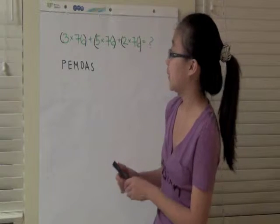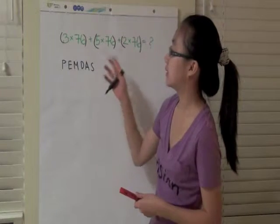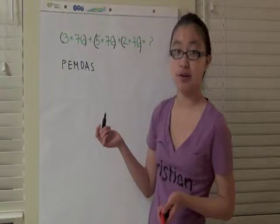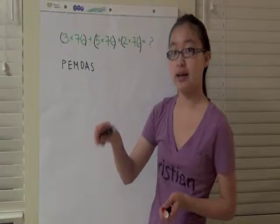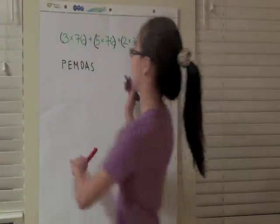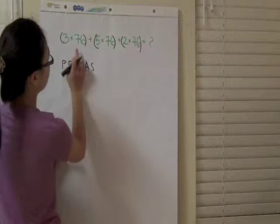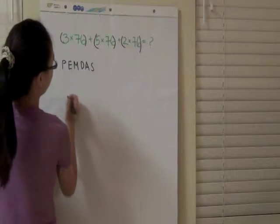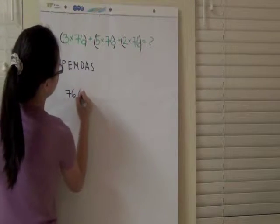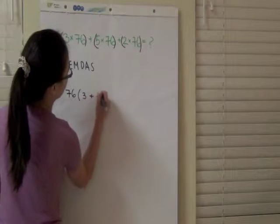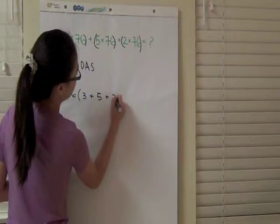One trick is called factoring, where you do the opposite of distributive property. When you multiply to everything in the parentheses, you can take everything out. So since 76 is shared in all of these, you can do 76 times 3 plus 5 plus 2.